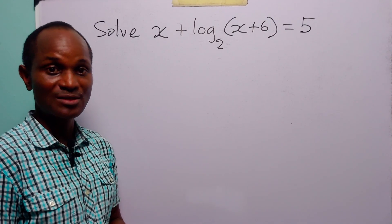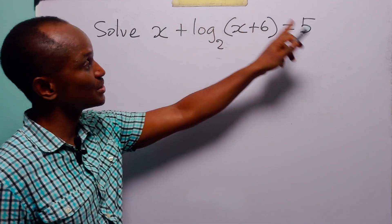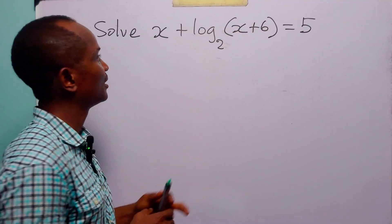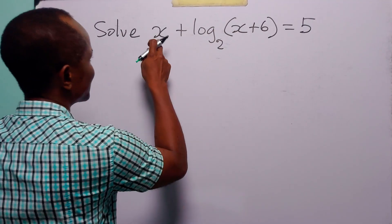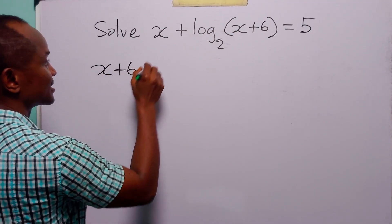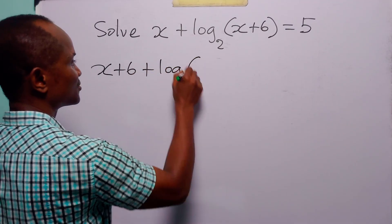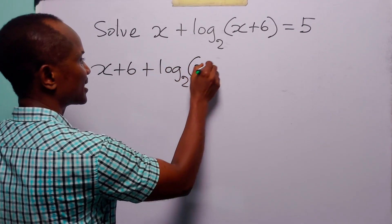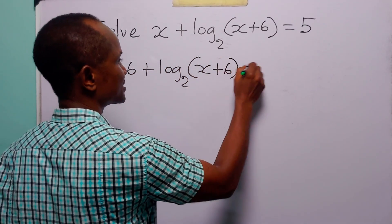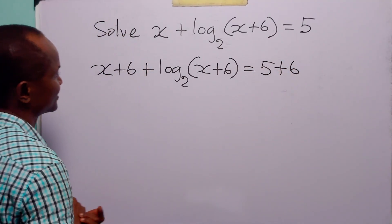To solve this problem, we are going to start by adding 6 to both sides of this equation. When we do that, we have that x plus 6 plus log to base 2 of x plus 6 is equal to 5 plus 6, which is 11.